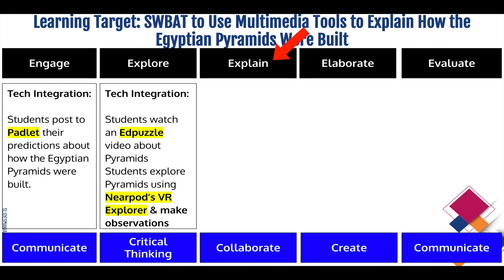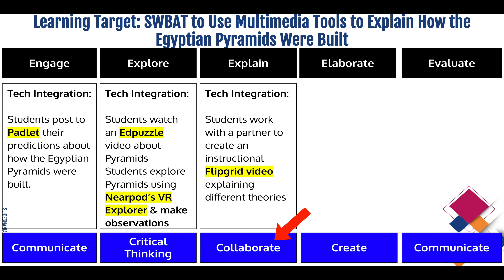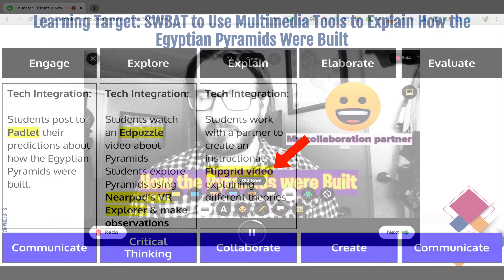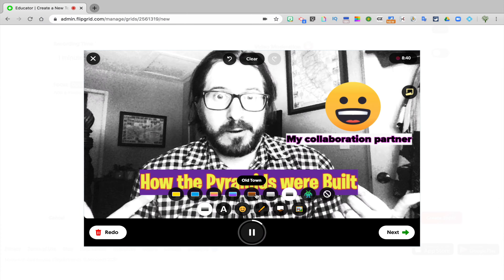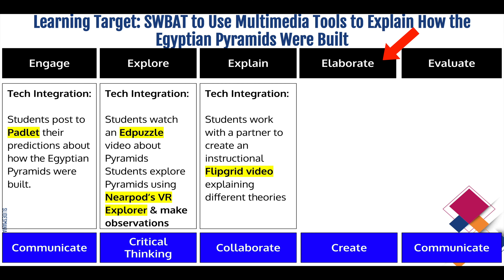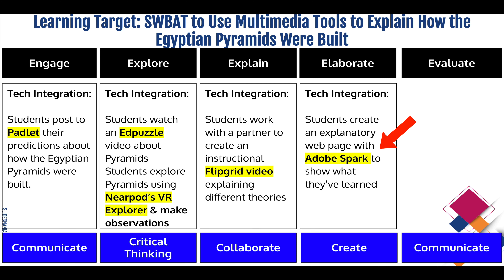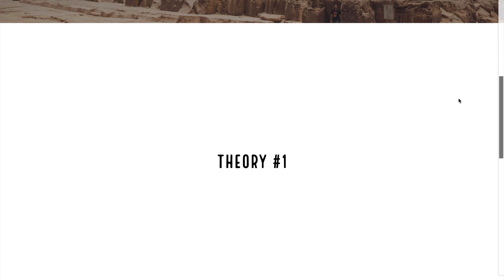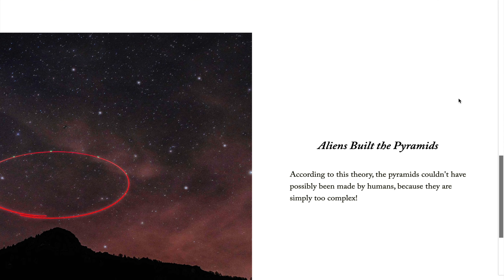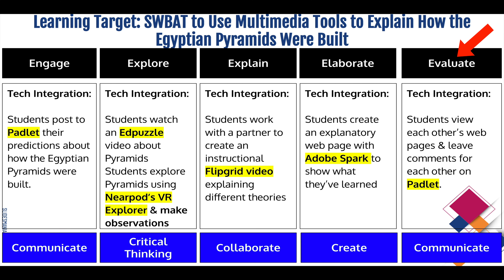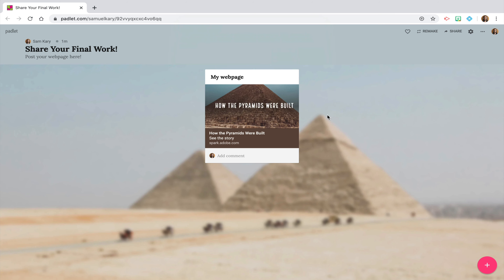For the explain phase, where students will be making meaning of what they learned, I'm going to have them do a collaborative activity by working with a partner to make an instructional video in Flipgrid explaining different theories about how the pyramids were built. In the elaborate phase, focused on creativity, students could make an explanatory webpage in Adobe Spark Post to show what they've learned using different multimedia tools. Then coming back full circle to the evaluate phase, focused on communication, students could post all the links to their webpages to a Padlet so the rest of the class can see and comment on their peers' work.